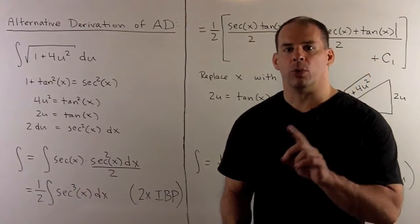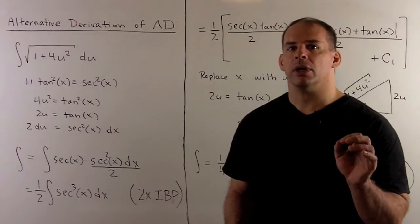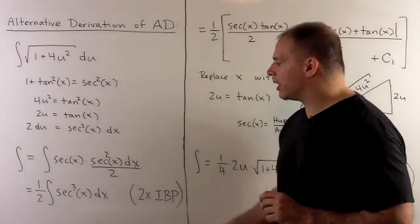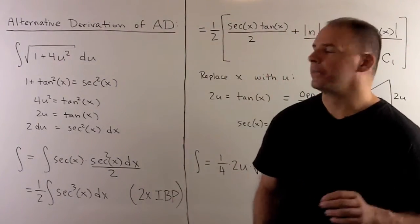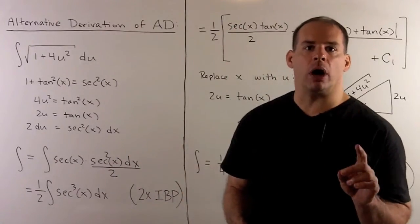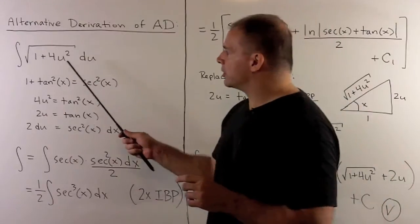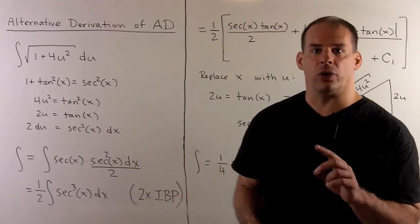Here's another derivation of our antiderivative from parts 1 and 2. In this case, we avoid hyperbolic trig functions completely. The trade-off, we need to know how to compute the antiderivative of secant cubed. Now, we have our definite integral. We use the same strategy as before. I'm looking for a function to sub out this 4u squared so that the square root goes away in the integrand.